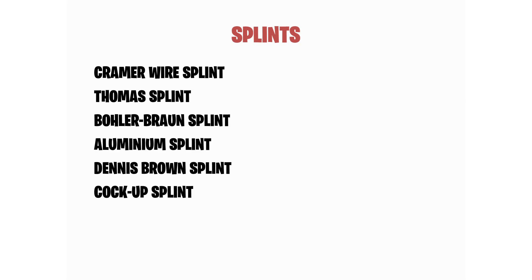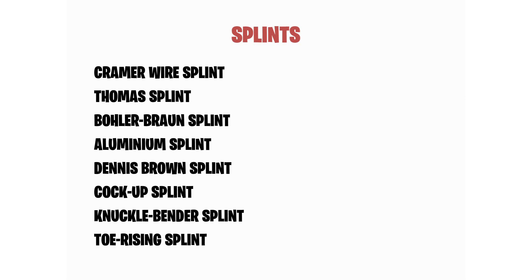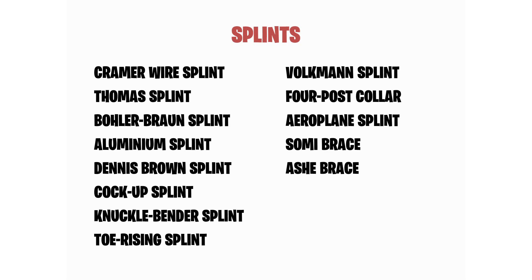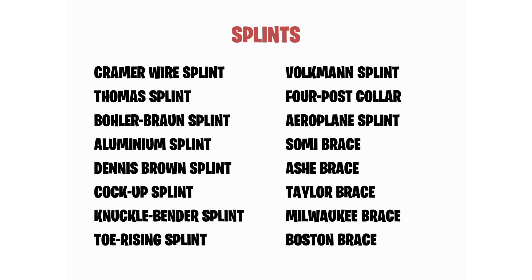There are a huge number of splints available. Starting from Cramer splint, the list goes on. Some of the splints include: Cramer wire splint, Thomas splint, Bowler Brown splint, aluminium splint, Dennis Brown splint, cock-up splint, knuckle bender splint, toe rising splint, Walkman splint, four-post collar, aeroplane splint, SOMI brace, ASH brace, Taylor brace, Milwaukee brace, Boston brace, and lumbar corset — and the list keeps going.